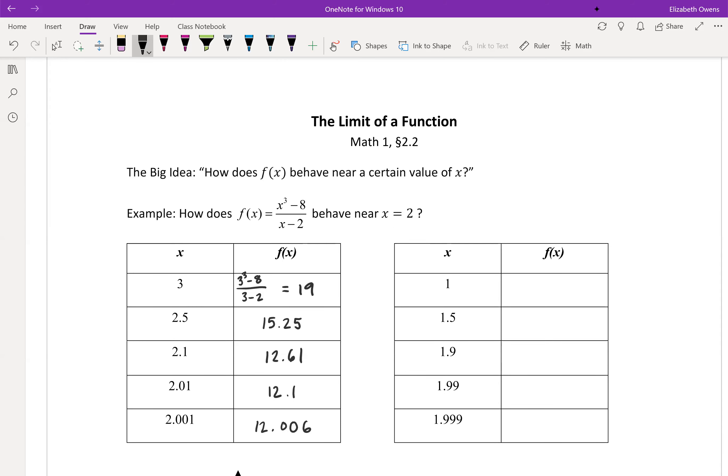We came in with x equals 1, you should have gotten the value of 7 for that. 1.5 gives you 9.25. 1.9 gives you 11.41. 1.99 gives you 11.94.